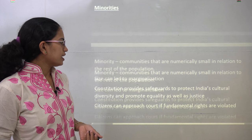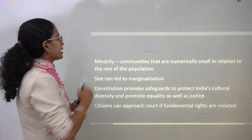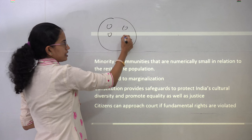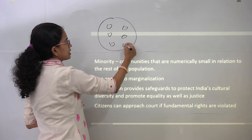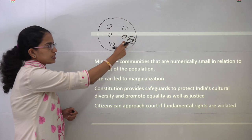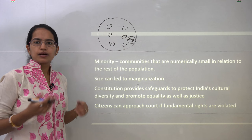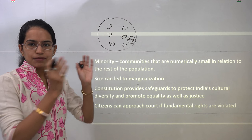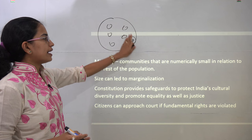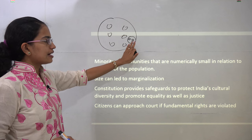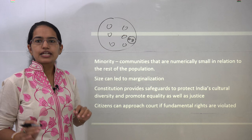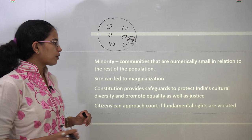Now coming to minority: if there are 20 students in a class and two students are from a separate community, those two students become the minority. That is the simplest way to explain it. A community which is numerically less in number in relation to the remaining population is declared as the minority population.